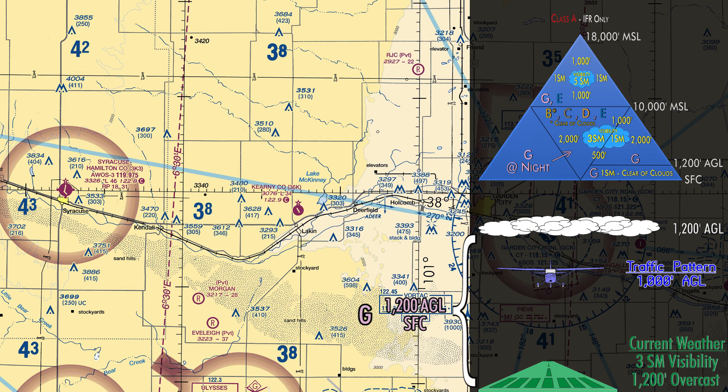Now this is during the daytime. If you remember, Golf at night is a little bit different. So if we take the same scenario — three miles visibility, 1,200 feet overcast — and go at nighttime to do takeoffs and landings in the traffic pattern, you'll need three miles of visibility, which is what we have. You'd also need to be 1,000 feet above the clouds, 500 below, and 2,000 feet horizontally away from clouds. If you're in the traffic pattern at 1,000 feet AGL and the clouds are at 1,200 feet AGL, you're not 500 feet below the clouds. So you would not be legal to fly in the traffic pattern at night at 1,000 feet AGL.